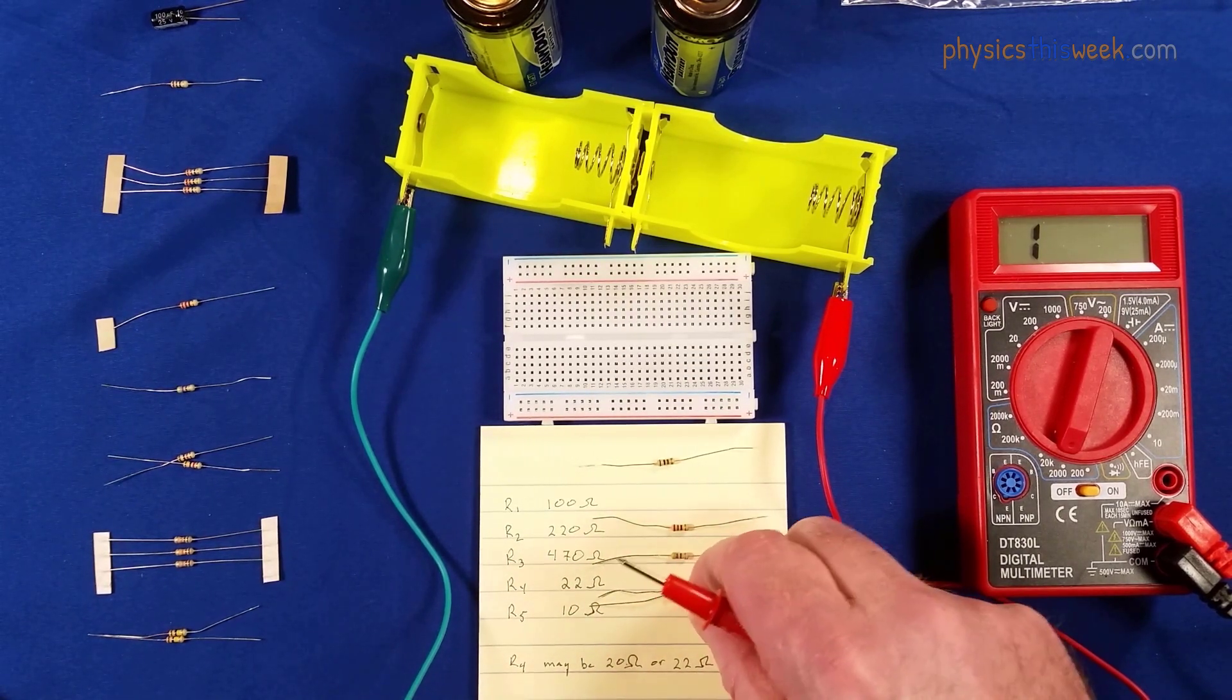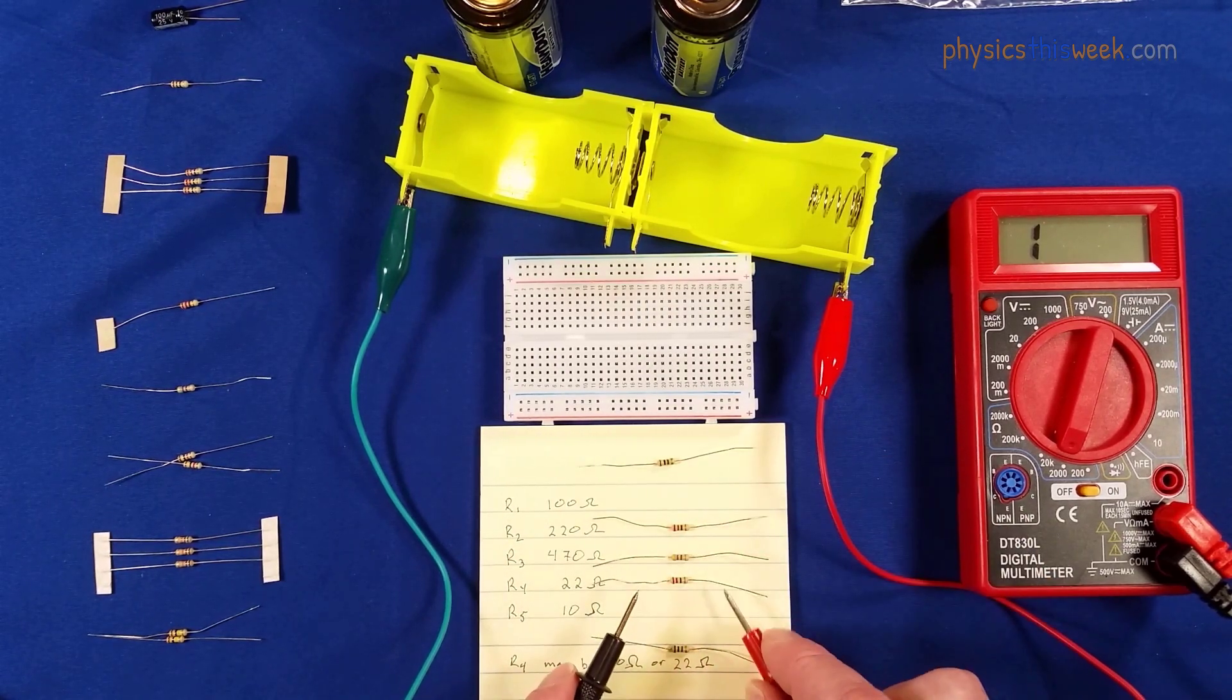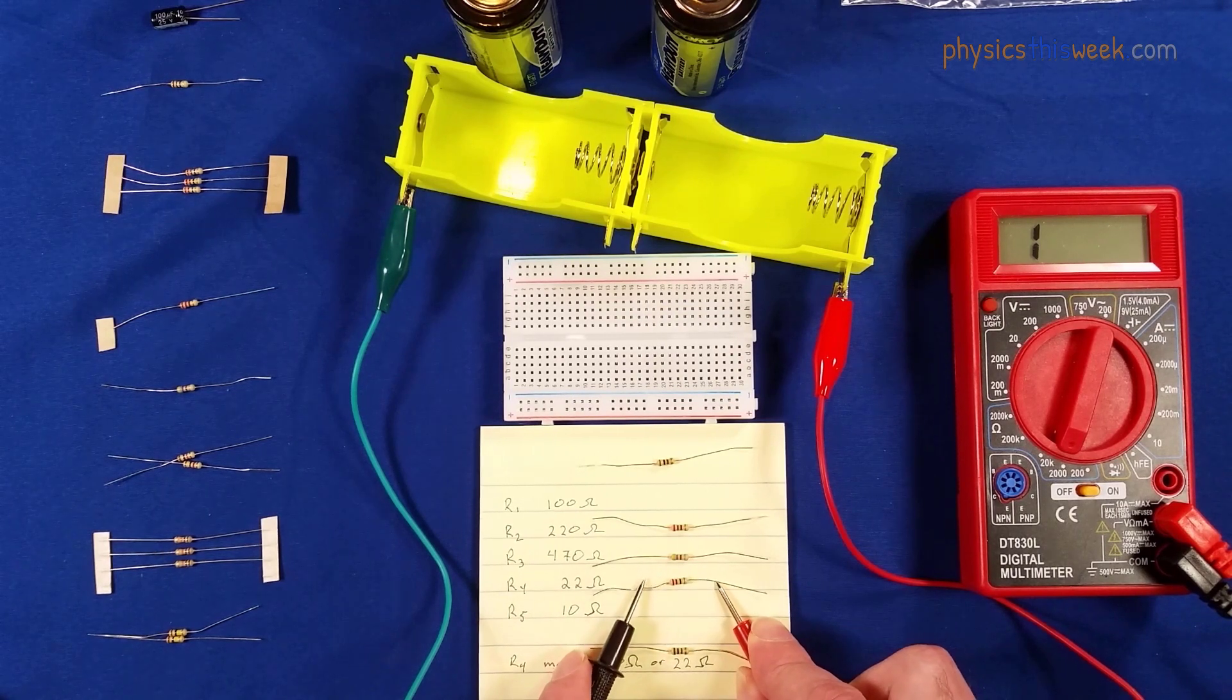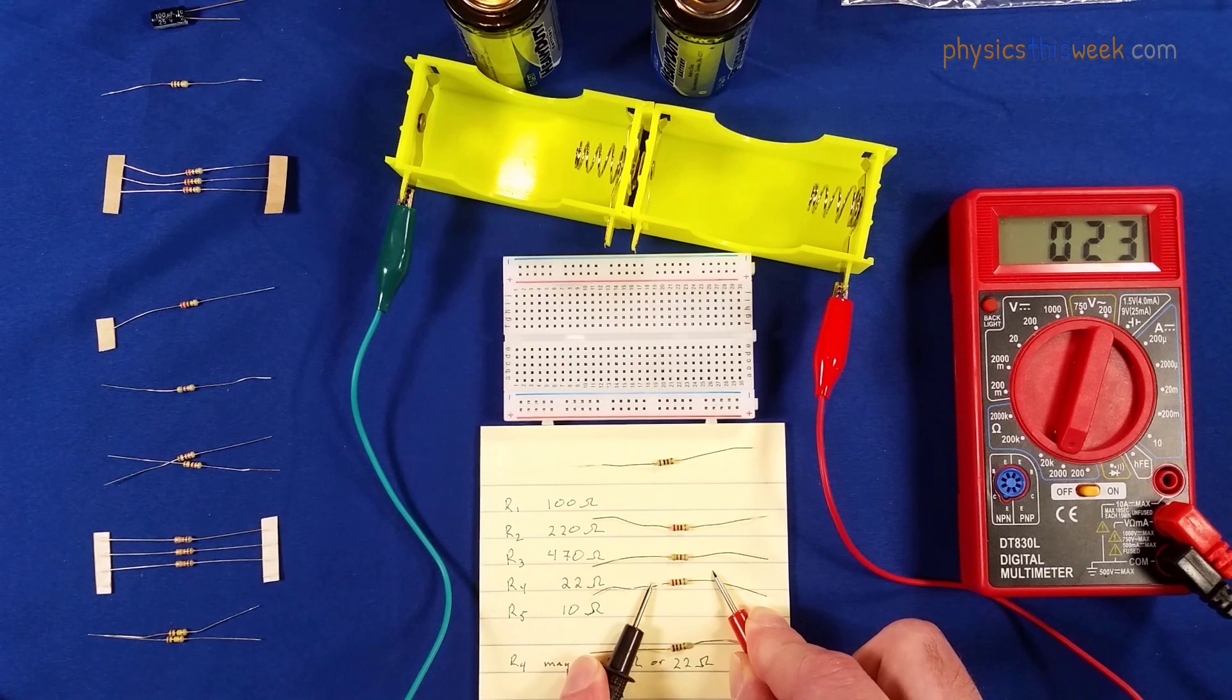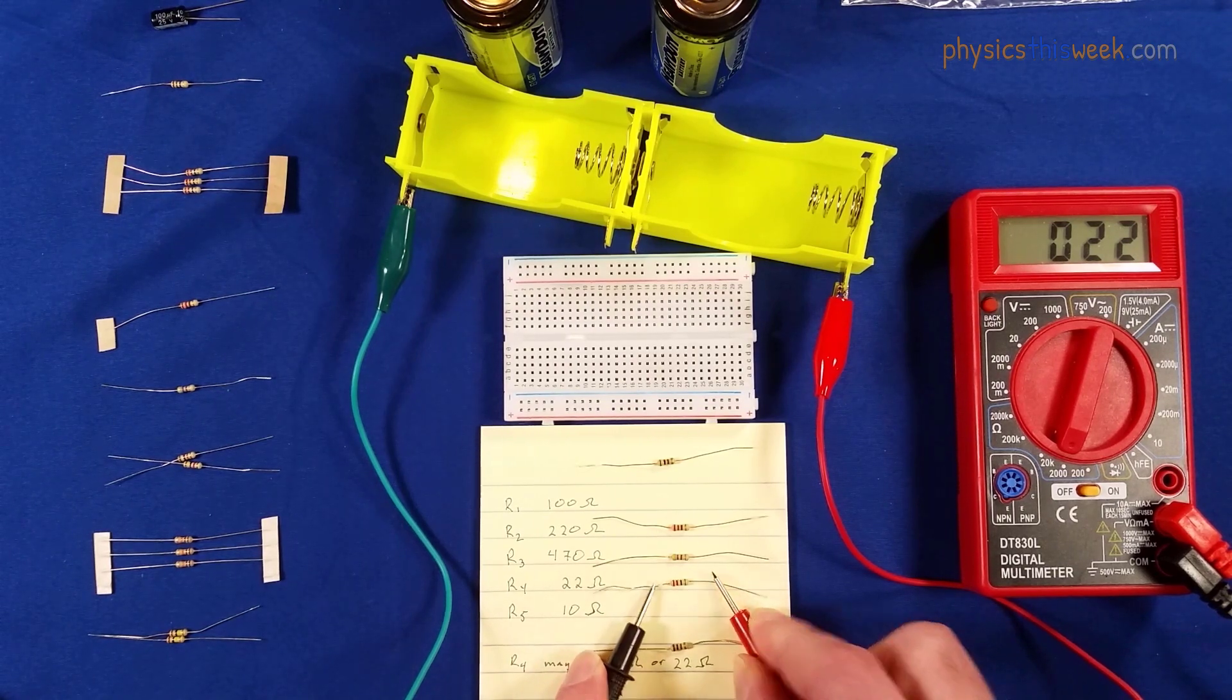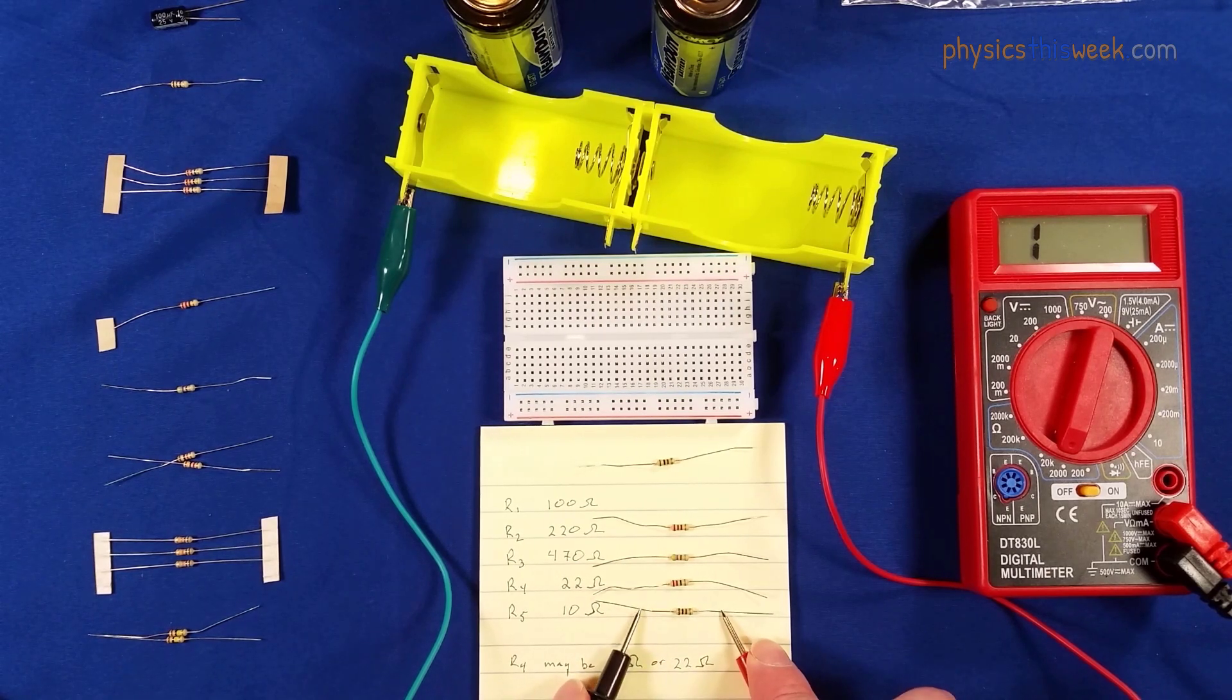Okay, the next two down. Measure this one. This is resistor number 4. You can see the value for that one. And you can also now get resistor number 5.